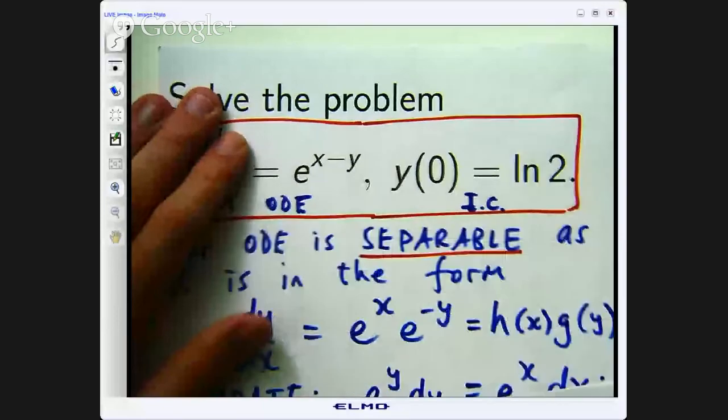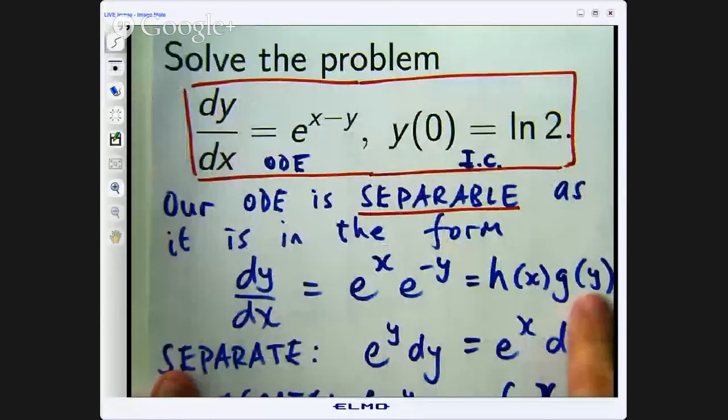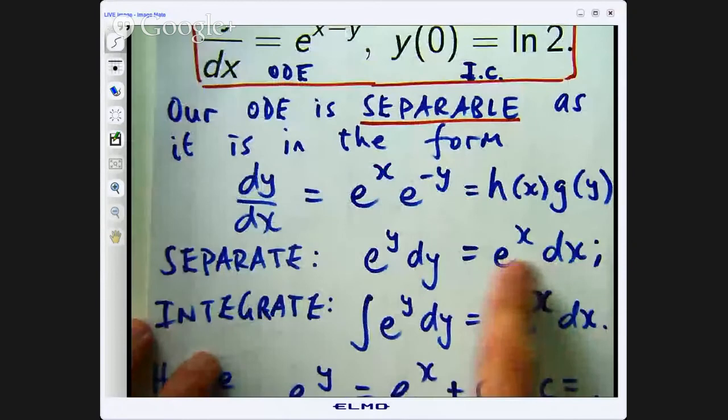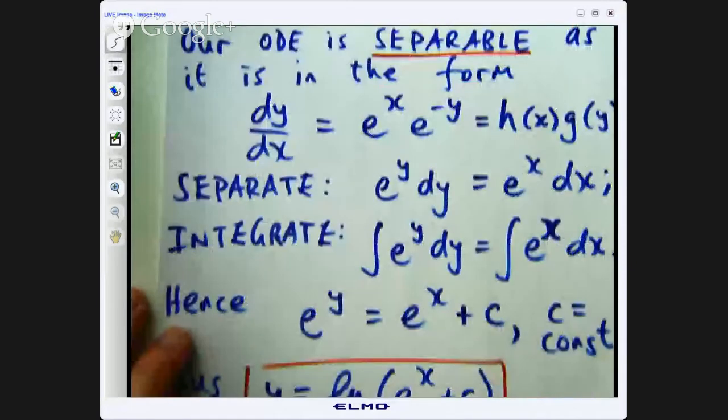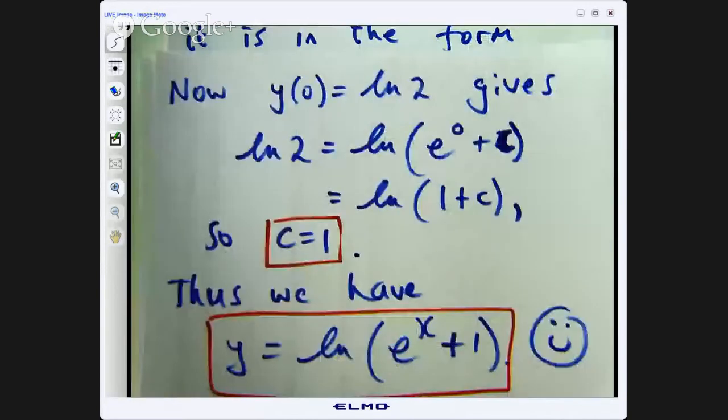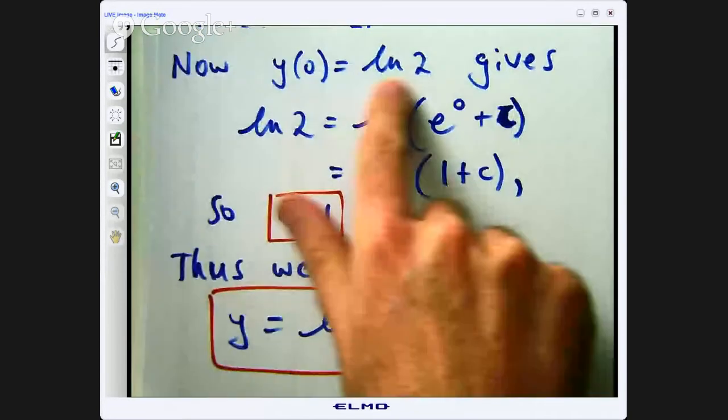And then because it was an initial value problem, you can find any constants of integration. We realized we had this form here for our differential equation. We separated the variables, we integrated, formed what is known as a general solution and then refined it through the initial condition.